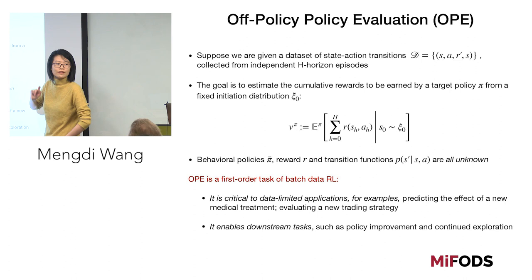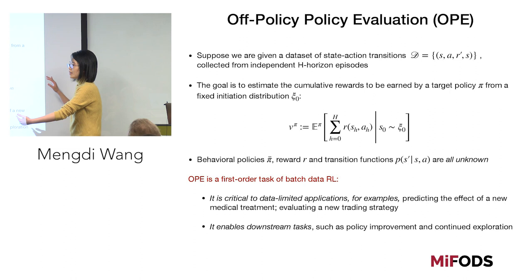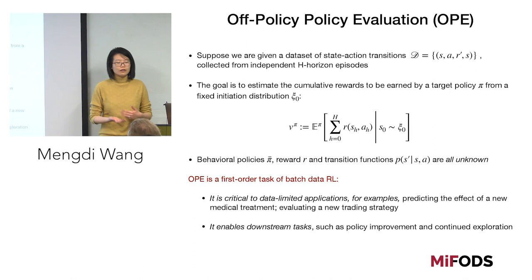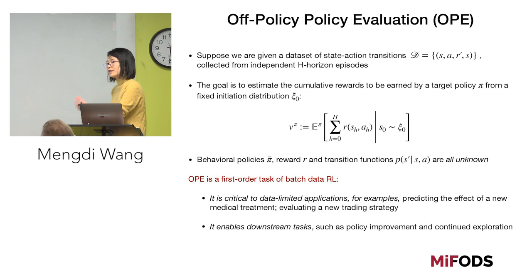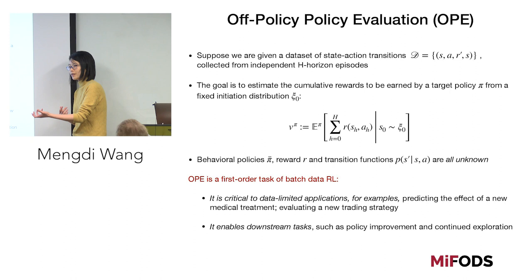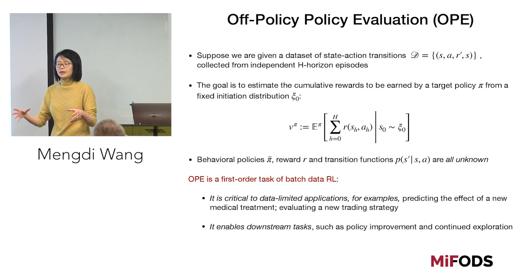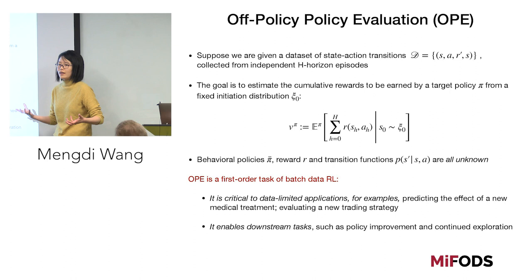For the batch problem, a first-order problem is called off-policy evaluation. We have a batch data set of state-action-state transitions generated from past observations or by some other agent. In the medical setting, we have historical records from past patients, each with a collection of medical claims forming a sample path. Our goal is to estimate the cumulative return value of a new policy from the data we have. We know the new target policy and the initial distribution, but we do not know the transition model or the behavioral policies that generated the data. If we can solve this evaluation problem well, we can evaluate all policies and pick the best.